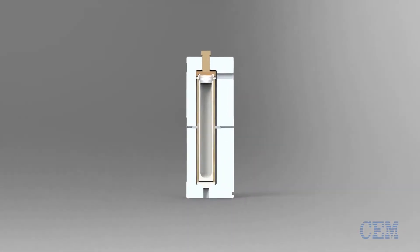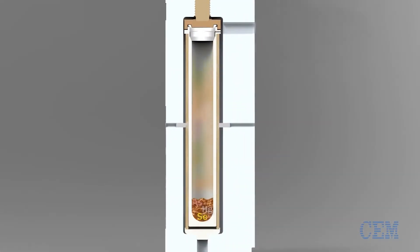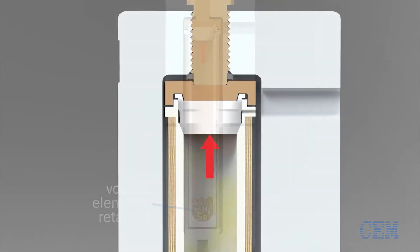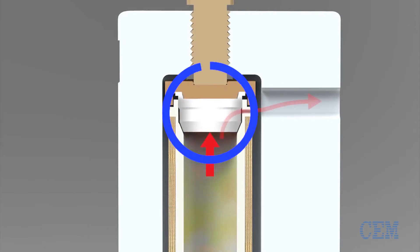The dual seal function also provides unmatched control of by-products from digestions such as CO2 and NOx fumes. I-PREP precisely vents these gases out of the vessel while maintaining the full integrity of the sample and analytes including volatile elements such as arsenic, selenium and mercury. The patented design of the dual seal plug provides a level of control and safety unmatched by other vent and reseal systems.